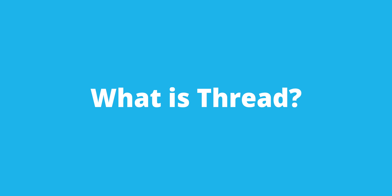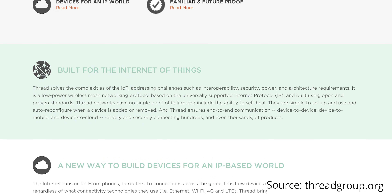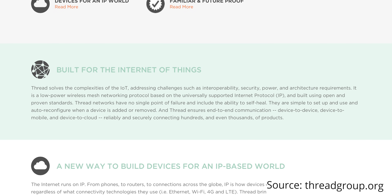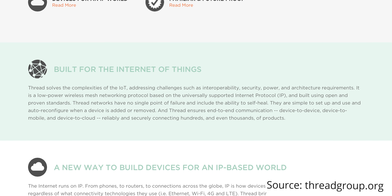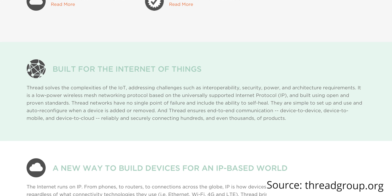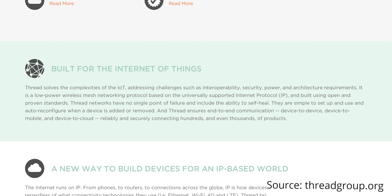So what is Thread? Well, the threadgroup.org defines Thread as a low-power wireless mesh networking protocol based on the universally supported internet protocol, IP, and built using open and proven standards. Thread networks have no single point of failure and include the ability to self-heal. I sort of compare Thread to other protocols like Zigbee or Z-Wave — these protocols connect together creating a giant mesh network, but they will always require a hub.